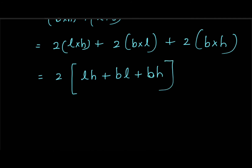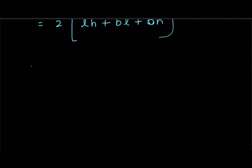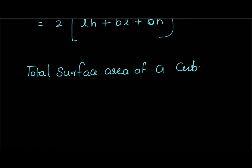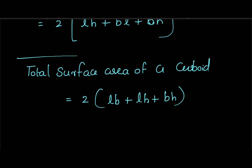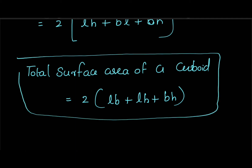This is the surface area of a cuboid. The surface area of a cuboid is very easy to calculate: it is length into height, plus length into breadth, plus breadth into height — all multiplied by 2. So the total surface area of a cuboid is equal to 2(LB + LH + BH).